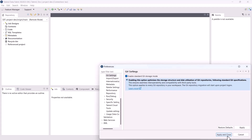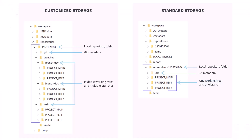This diagram illustrates the differences between the customized Git storage mode and the standard Git storage mode. The standard Git storage mode follows the standard Git specifications. Enabling this mode optimizes the storage structure and disk utilization of Git repositories, and ensures seamless interoperability and compatibility with third-party Git tools.